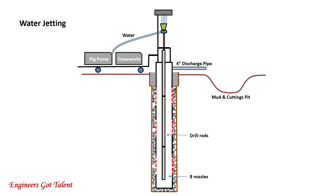Water jetting is another method of well cleanup to remove bentonite mud cake and debris inside the well, but this is only applied at the well screens. This process will make sure screens are cleared from any obstructions. Pressurized water is pumped using the rig pump and exits at the end of the drill rod through 8 concentric holes. The jets of water coming out from the holes clean the inside of the casings. The pressurized water with mud and cuttings are carried up and out of the well, then discharged at the mud pit.